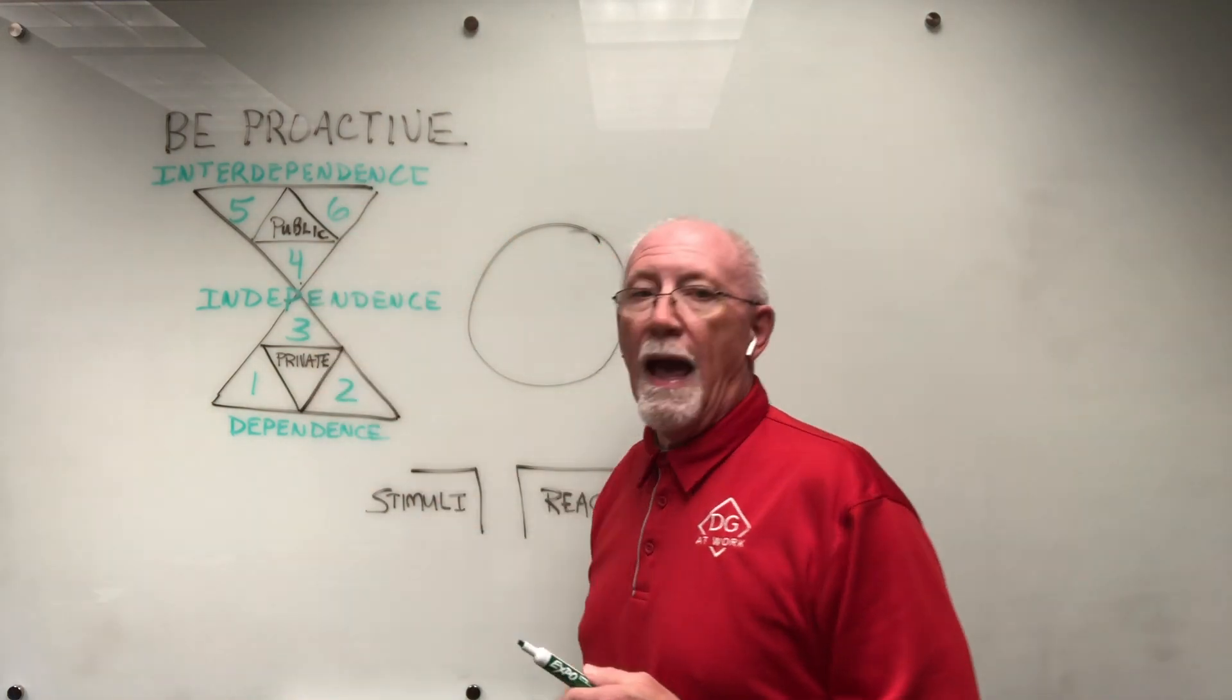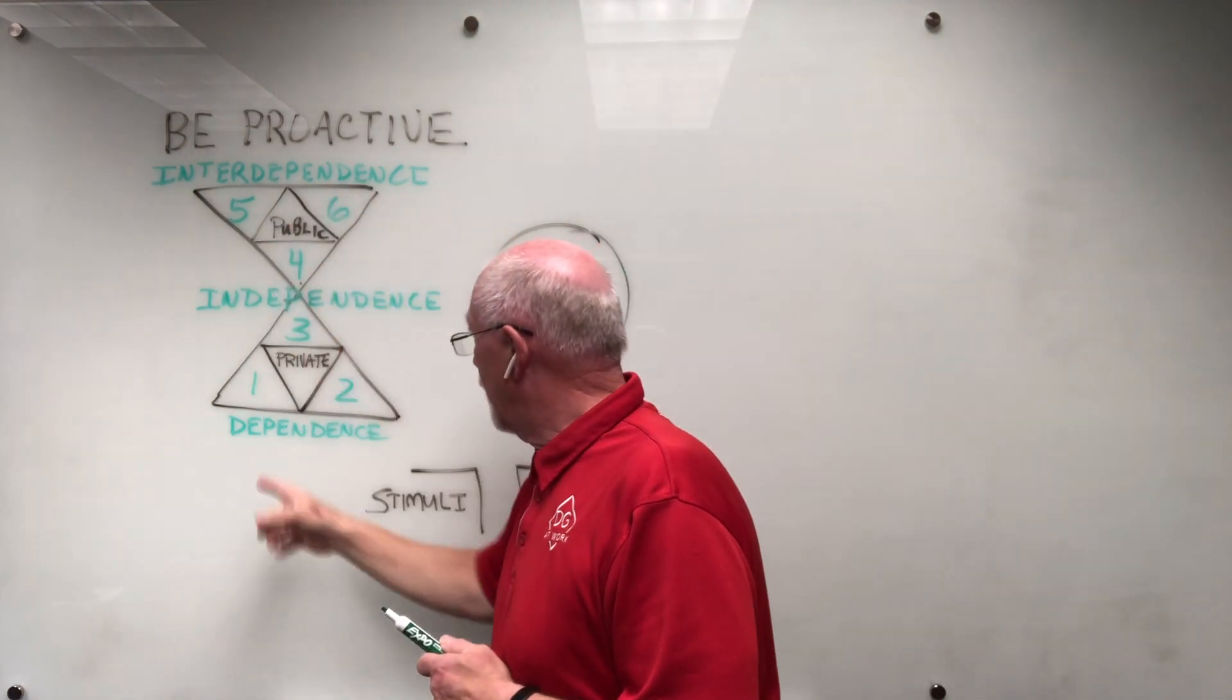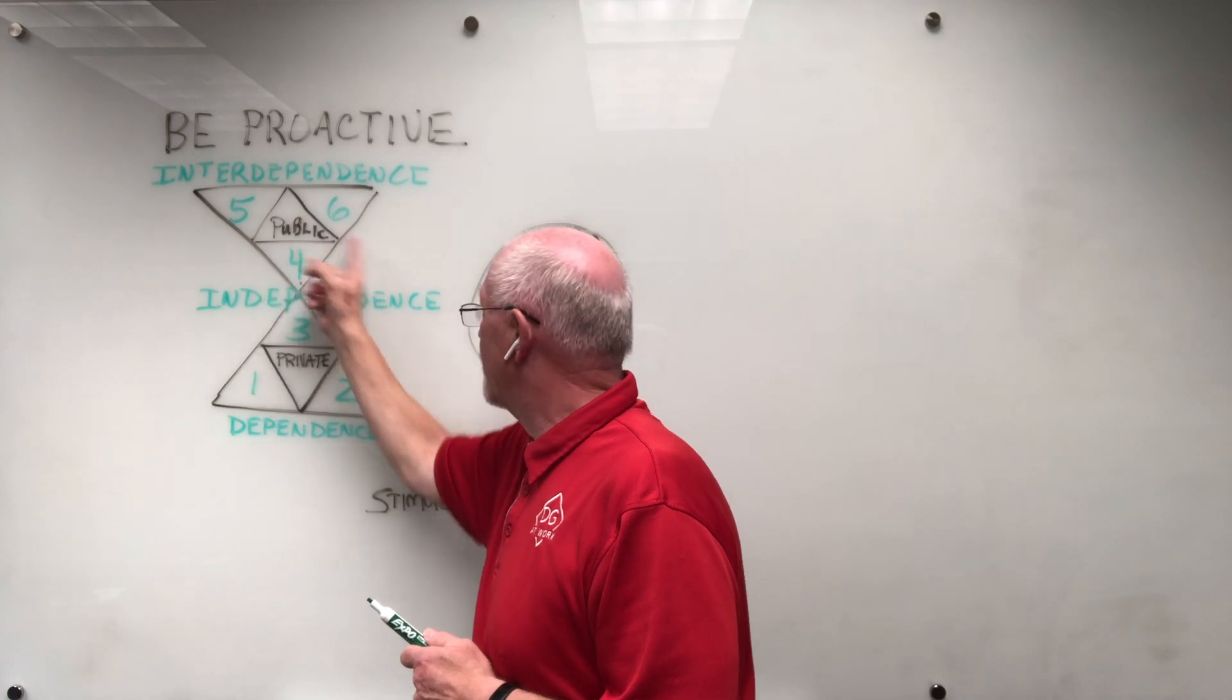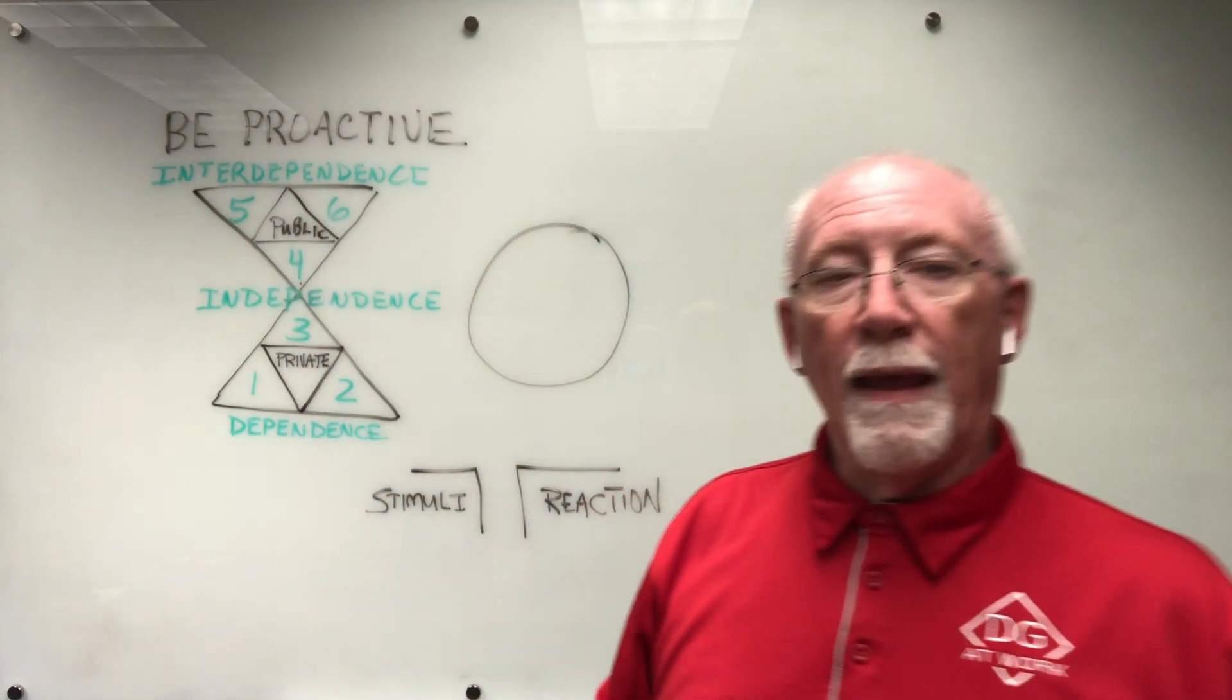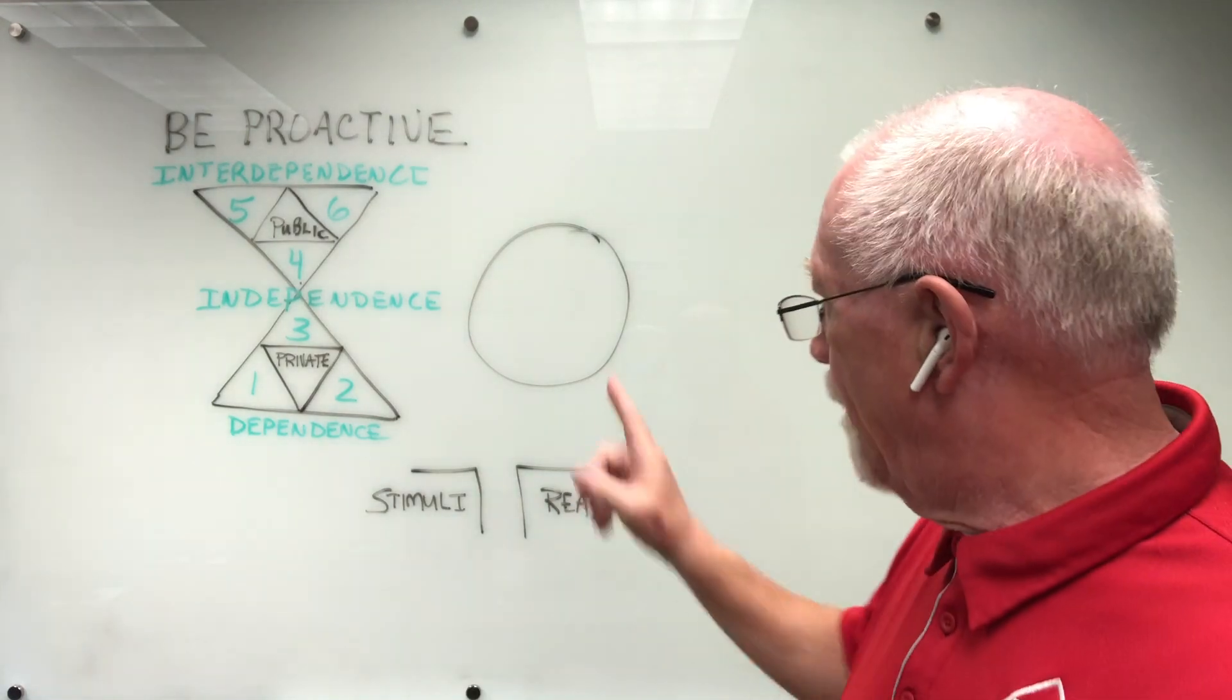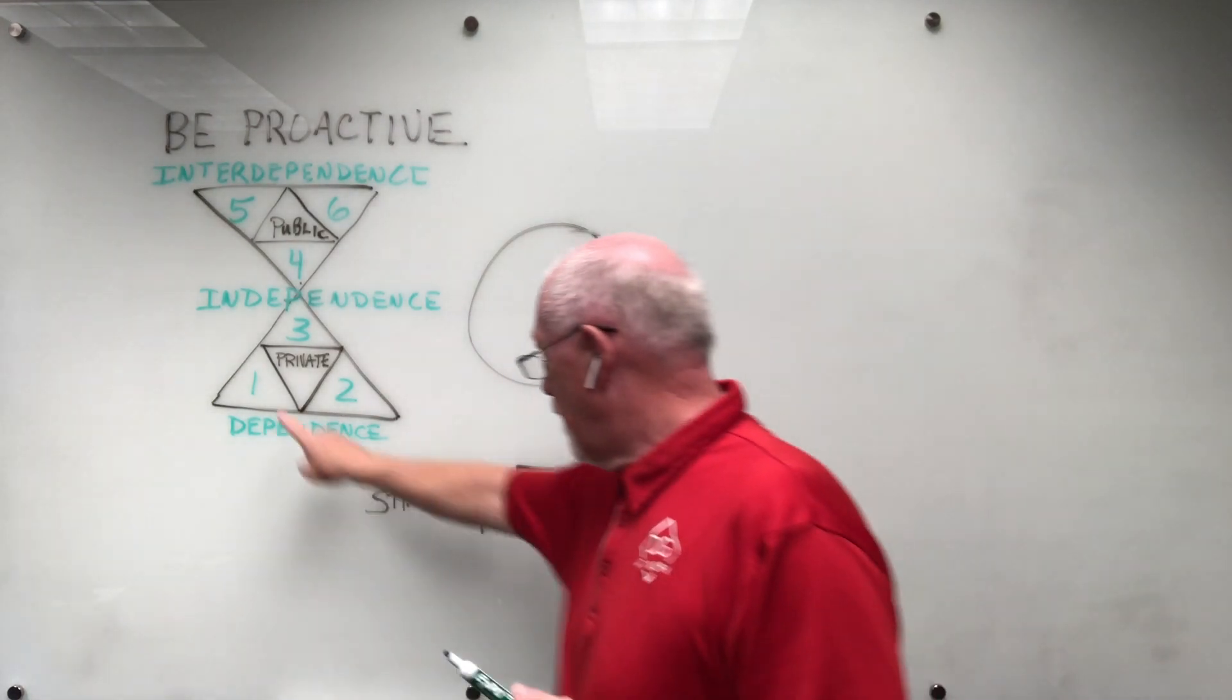So the seven habits—six are identified here: one, two, three, four, five, six. The circle makes seven: sharpening the saw. We'll add that later. But today I want to focus on habit number one right here.